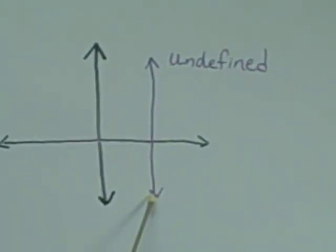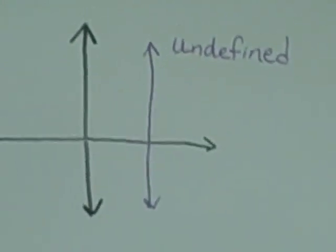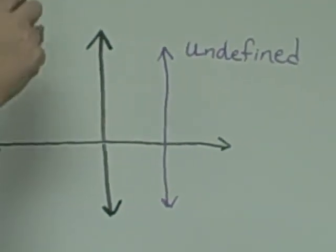Vertical lines, their slope is undefined. The slope of these two lines needs to be memorized.